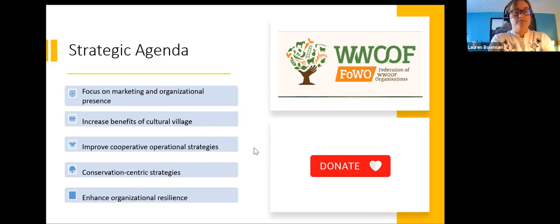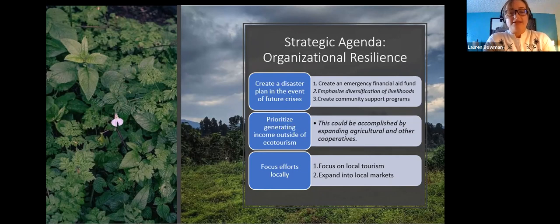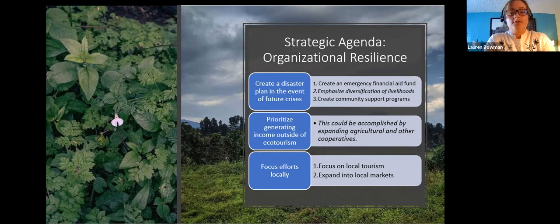Our top three organizational resilience strategies were: first, creating a disaster plan for future crises, encompassing three key points — creating an emergency financial aid fund, emphasizing diversification of livelihoods so that in the event of ecotourism loss people aren't left reeling, and creating community support programs. It's important to note that when COVID initially hit, many people were already helping their neighbors, but a more streamlined step-by-step emergency plan could eliminate confusion and help GGB respond more quickly.